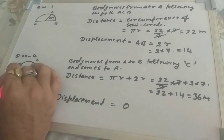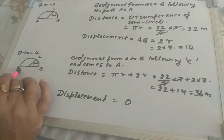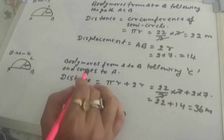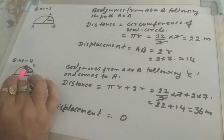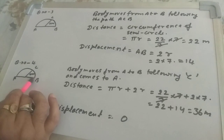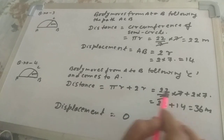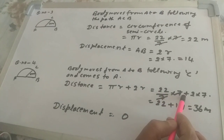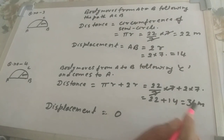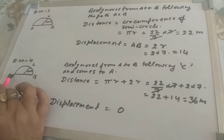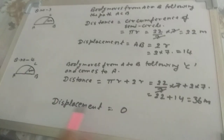Now a modified version: the body starts from A, follows the semicircular path through C to B, and then returns to A along the diameter. Distance equals the circumference of the semicircle plus AB: πr + 2r = (22/7 × 7) + (2 × 7) = 22 + 14 = 36 meters. Since the body starts and ends at A, the initial and final positions are the same, so displacement equals zero.